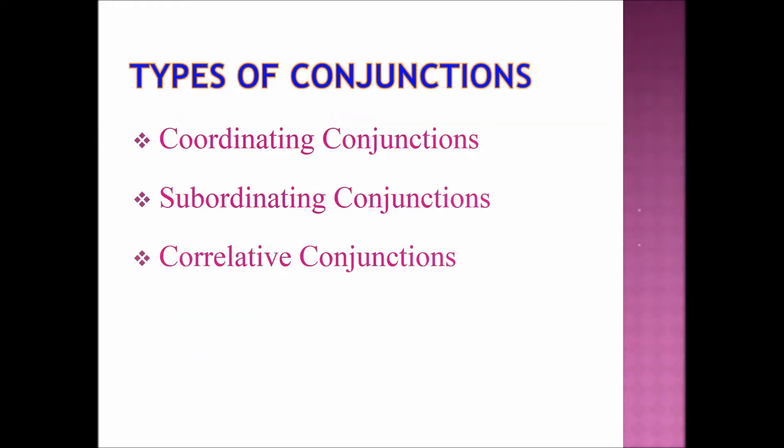Next, we are going to learn about types of conjunctions. There are three main types of conjunctions. First is coordinating conjunctions, second is subordinating conjunctions, and the third is correlative conjunctions.